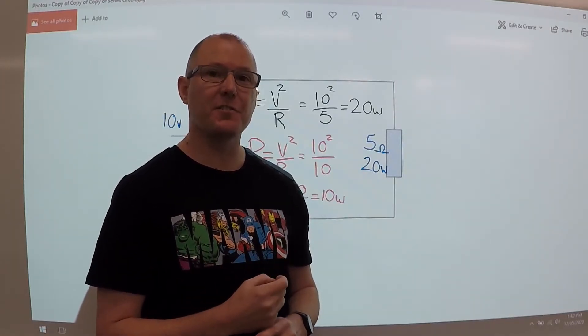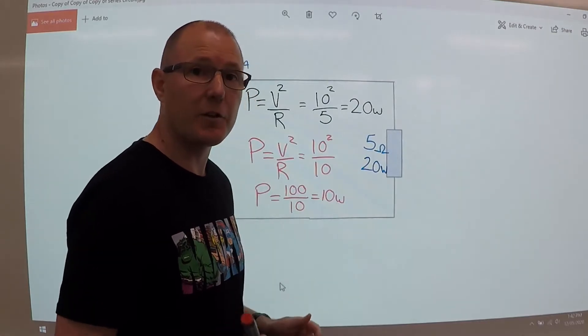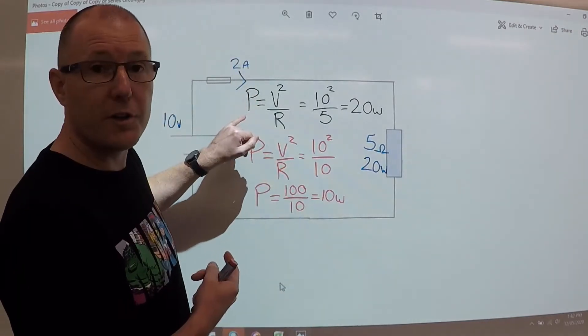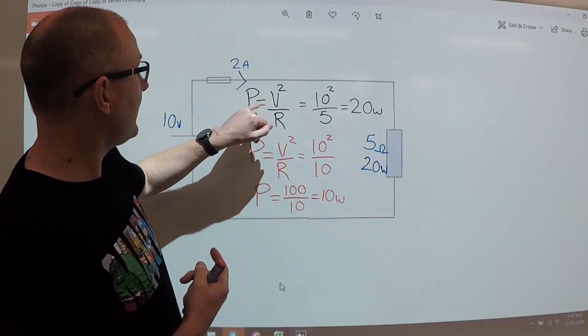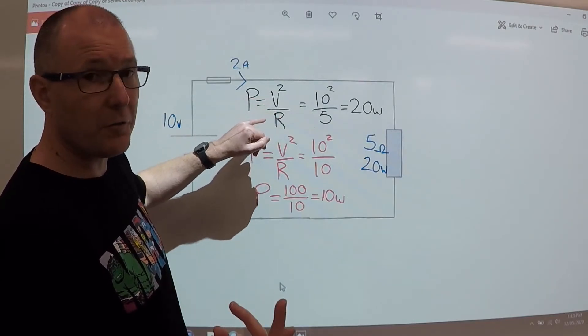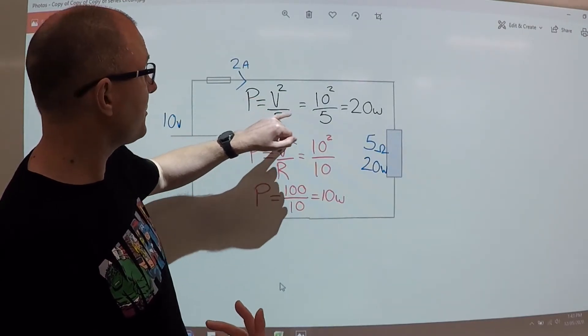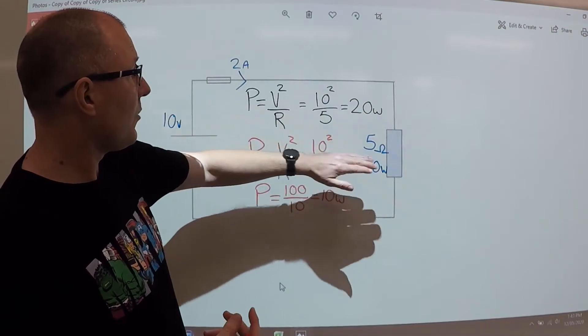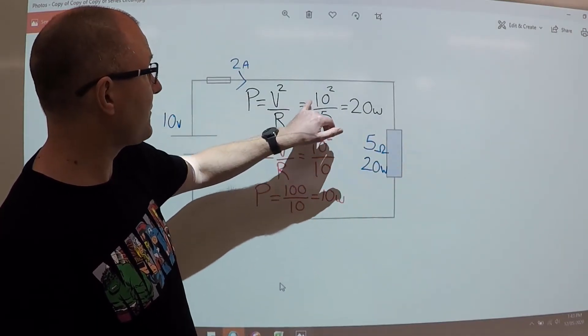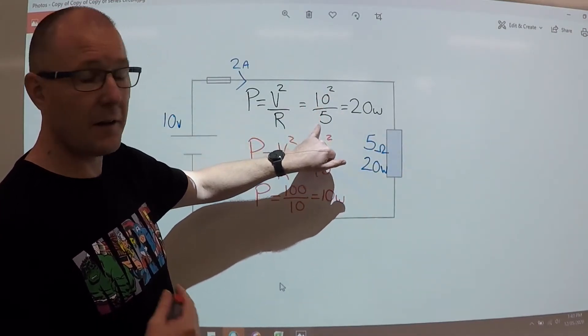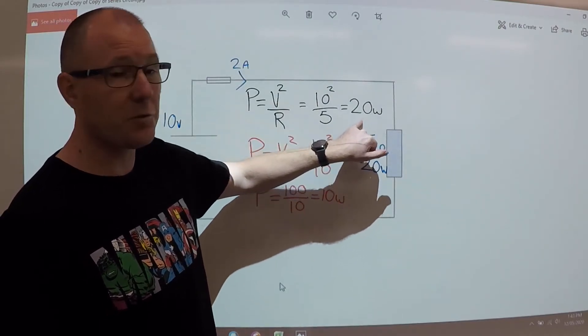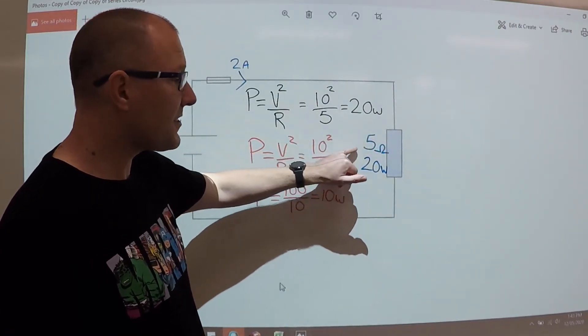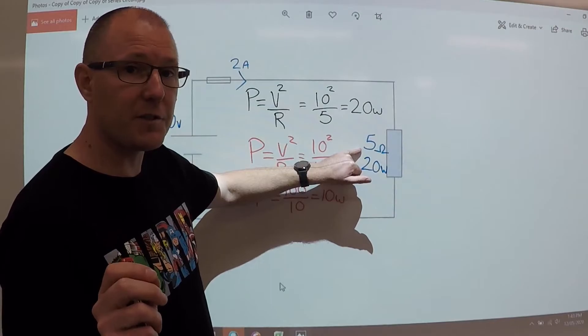Let's have a look now how changing the resistance affects the power. So let's have a quick look at our formula. We'll use P equals V squared, or the voltage squared, divided by the resistance. So with our 5 ohms, that gives us 10 squared, divided by the 5 gives us 20 watts.